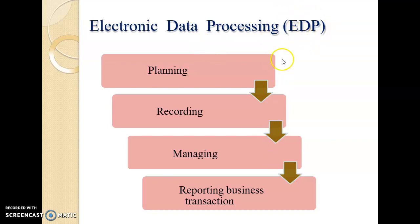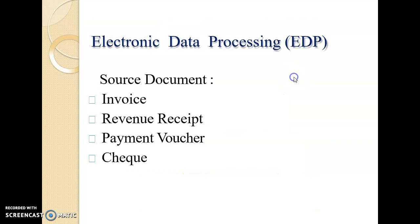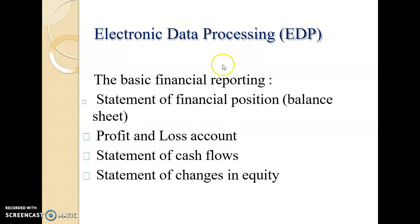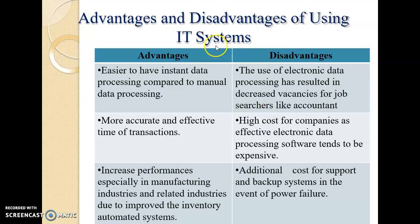This is the EDP process — electronic data processing — covering planning, recording, managing, and reporting business transactions. Electronic data processing draws from various source documents such as invoices, revenue receipts, payment vouchers, and checks. Electronic data processing supports basic financial reporting, which consists of the statement of financial position (balance sheet), profit and loss statement, statement of cash flows, and statement of changes in equity.